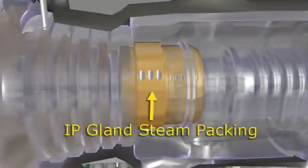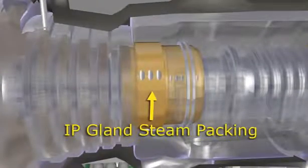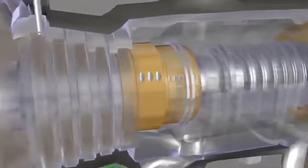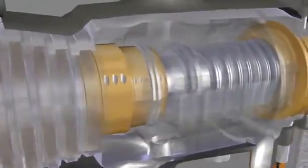The intermediate stage packing is located at the reheat steam inlet and is a seal between the high pressure and intermediate pressure sections of the turbine.